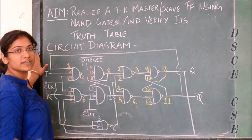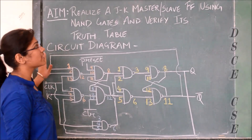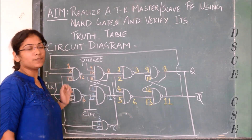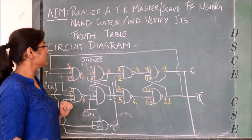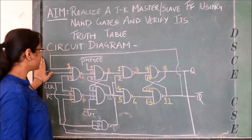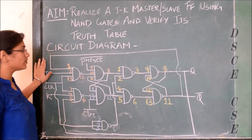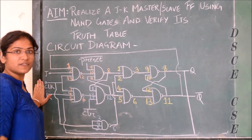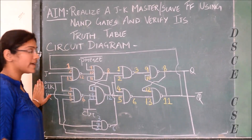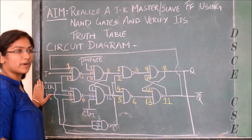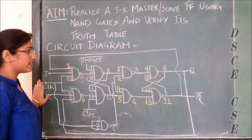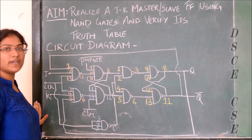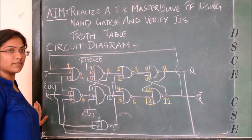In this experiment, we realized the JK master-slave flip-flop using NAND gates. The circuit diagram will be this. We need to make use of three ICs. The first two ICs will be IC7410 and the third IC will be IC7400.